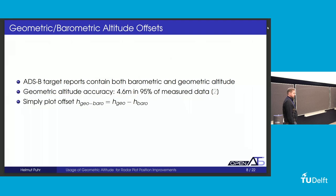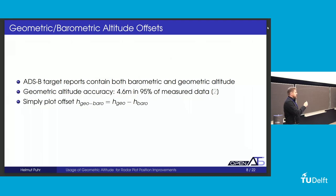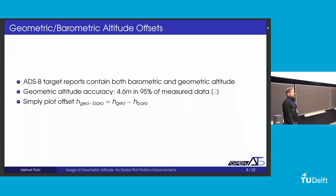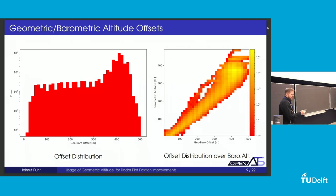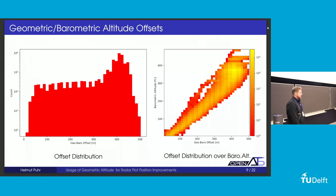Geometric and barometric altitude offsets are quite easy to calculate — you make a difference. You still have to adjust for the geoid, but apart from that it's rather straightforward. The assumption is that geometric altitude from ADS-B is more accurate than barometric altitude. This is supported by a paper: the standard deviation of geometric altitude was measured in 2014 to be 2.3 meters, with a two-sigma value of about 5 meters. On the left-hand side, we have the distribution of offsets on the x-axis and count on the y-axis. Note the logarithmic scale — a large portion of altitude offsets are about 300 meters or more, which is significant.